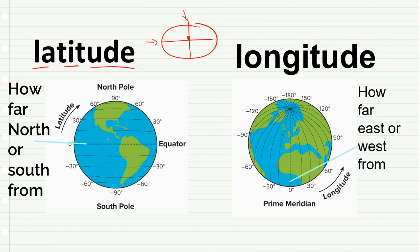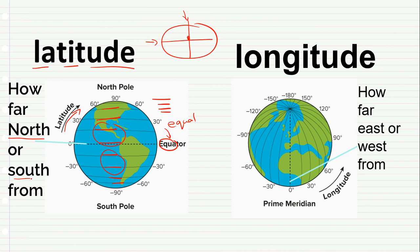Latitude tells us how far something is from the equator. These lines go horizontally — it kind of looks like a lot of equal-to signs. That's a helpful hint because equator looks like equal. Latitude goes this way and tells us how far north or south something is from the equator.